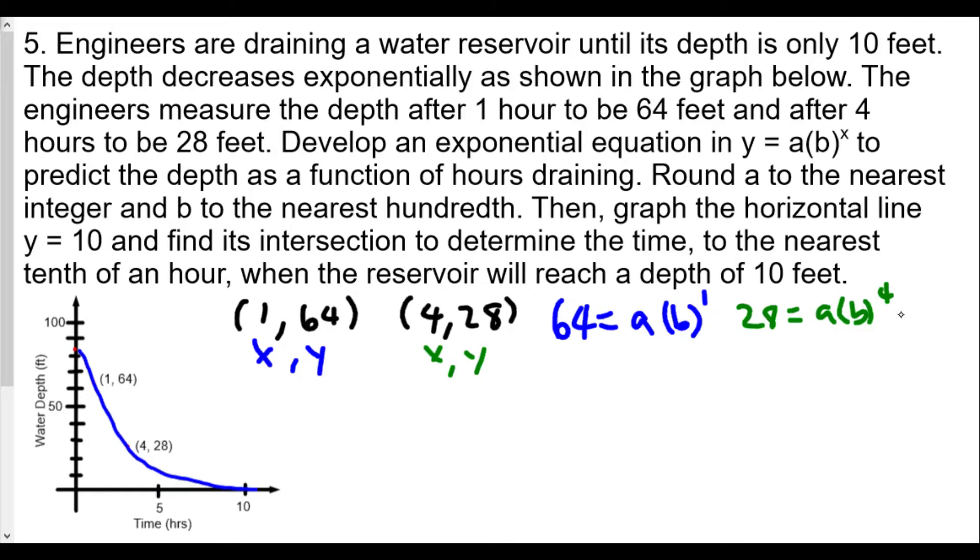Just like before, we're going to put 28 = a(b^4) on top and 64 = a(b^1) on the bottom, then divide. The a values will divide out. We're going to get b^4 divided by b^1, which is b^3. And 28 divided by 64—I know we can divide both top and bottom by 4—so we're going to get 7/16.